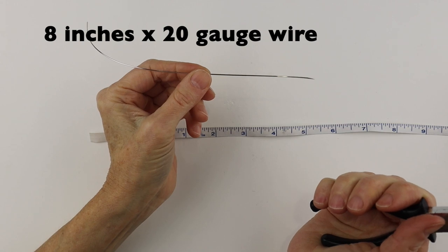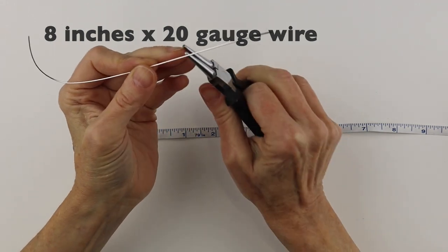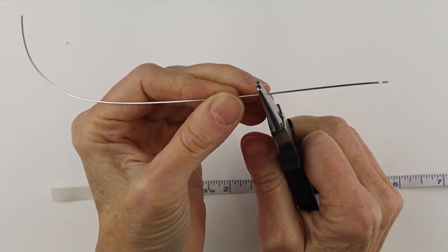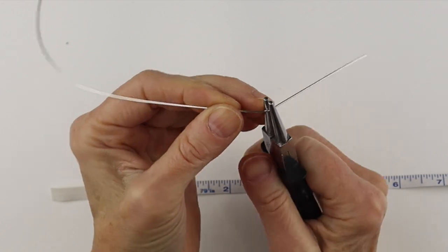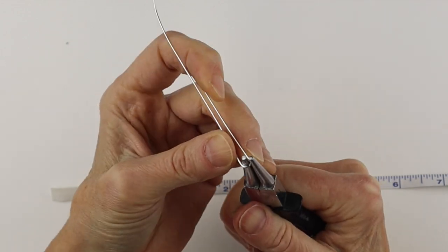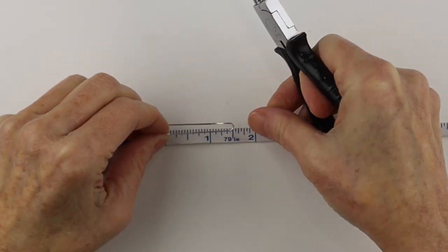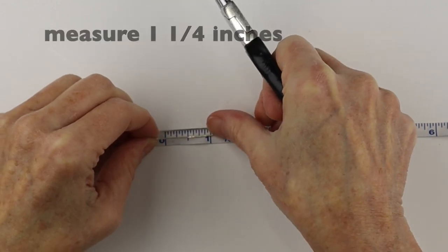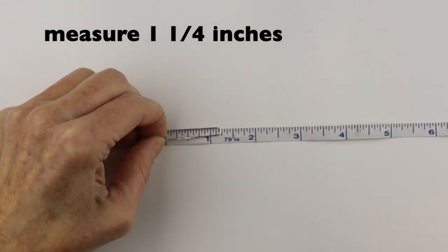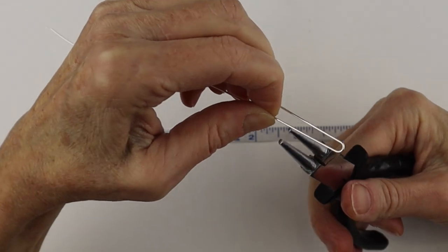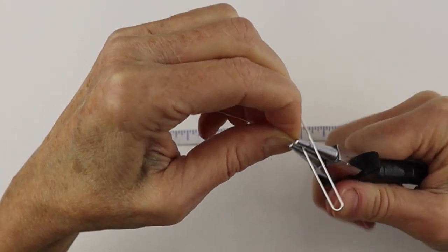I'll start with about an 8 inch piece of wire and a couple inches from the end I'm just going to bend it with my round pliers. And then we're going to measure about an inch and a quarter. Put your finger on the end and bend it back.